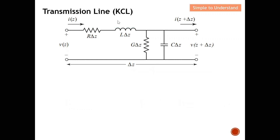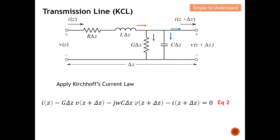Next, I'll explain Kirchhoff's Current Law. The current entering the node is taken as positive and the rest as negative. Since current in series remains the same, we have the I(z) term. For the conductance branch, the current is obtained by multiplying the voltage by the conductance G × Δz, giving the current flowing through that path.